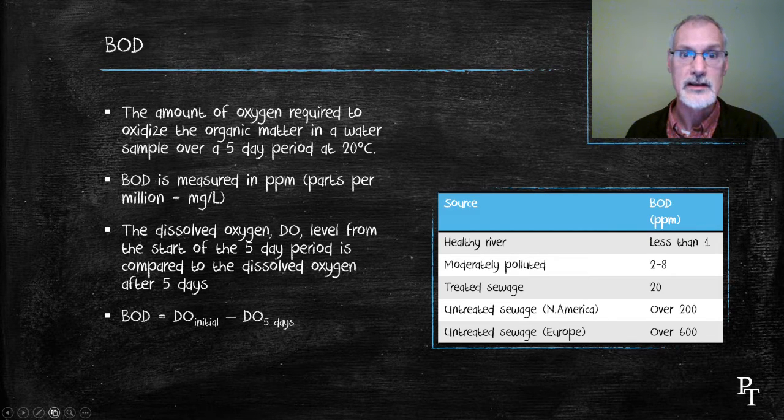Here you can see a table of the BOD of several different bodies of water. In a healthy river, where there's very little organic matter, or nitrates, or phosphates, the organisms won't grow.